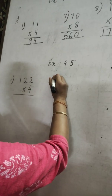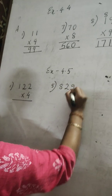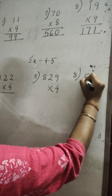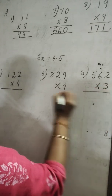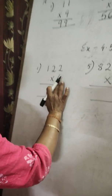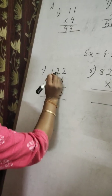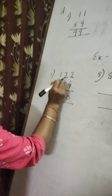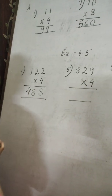Next, I will show you how to multiply a three-digit number by a one-digit number. First multiply 4 with the number in the ones place — 4 twos are 8. Then with the tens place — 4 twos are 8. Then with the hundreds place — 4 ones are 4. We got the answer 488.